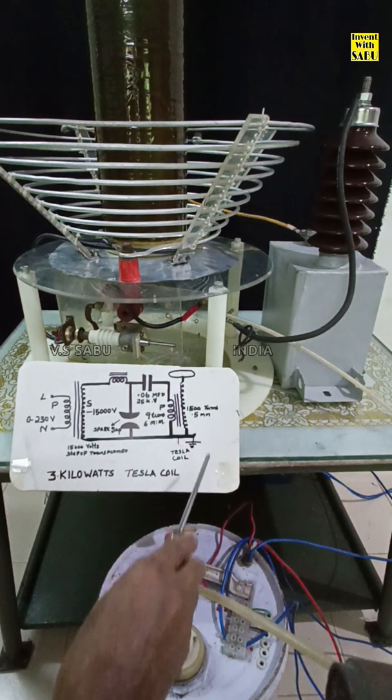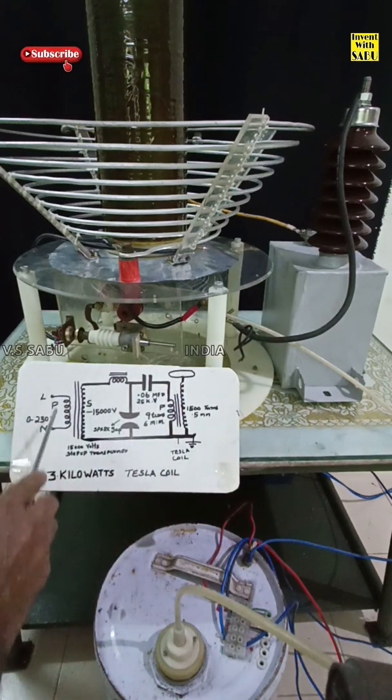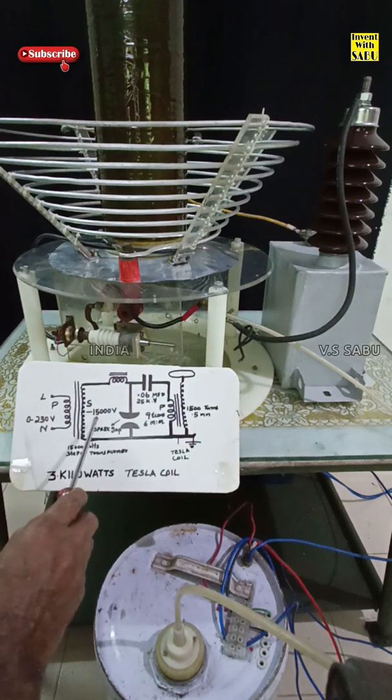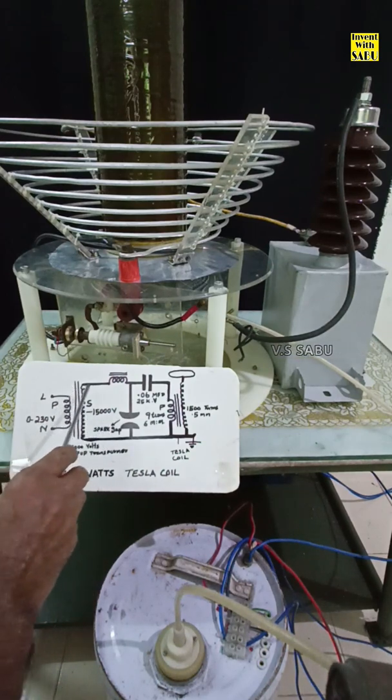This is a Tesla coil circuit diagram. This is a step-up transformer. The transformer is primary 230V, secondary is 15,000V. Secondary is 2 chokes.